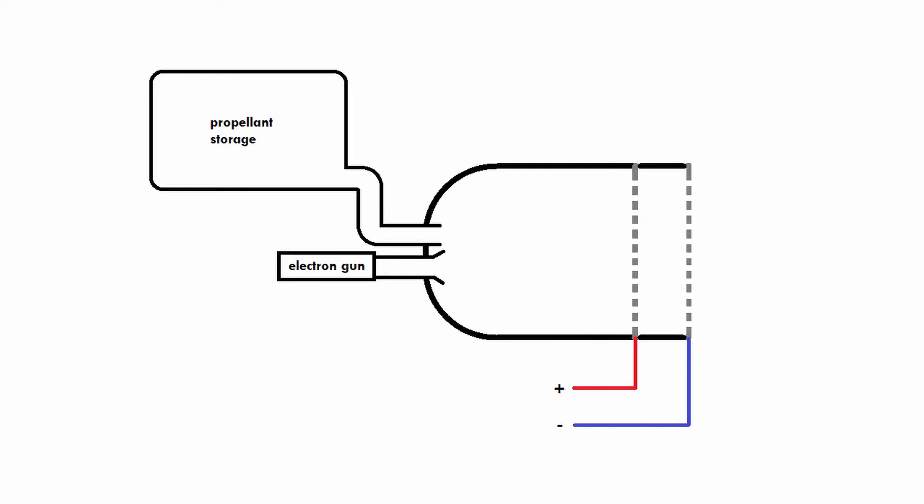But gas is not the only thing that enters the ion thruster. There is also an electron gun placed right at the beginning, and that electron gun is going to fire electrons into the ion thruster. So we have gas and electrons going into the device. These electrons then run into the gas molecules, and as a result, the gas molecules start losing electrons themselves, making them positively charged.